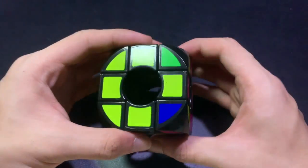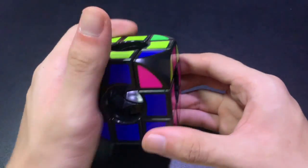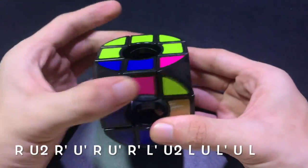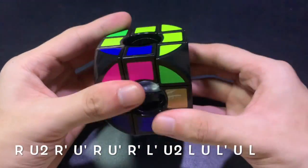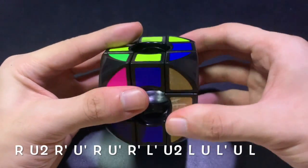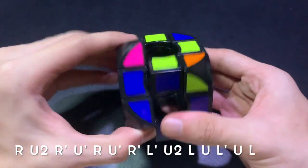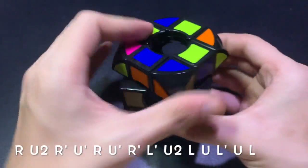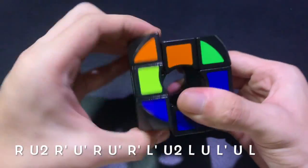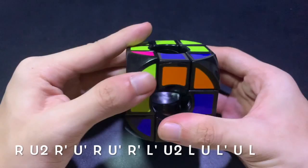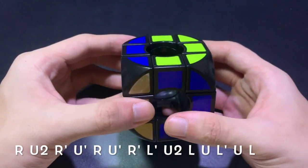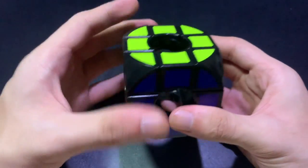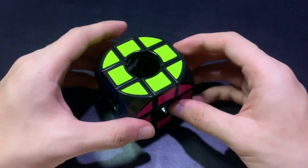So since they're still not correct, let's do it one last time. R, u2, r prime, u prime, r, u prime, r prime, l prime, u2, l, u, l prime, u, and finally l. Now we have resolved void cube.